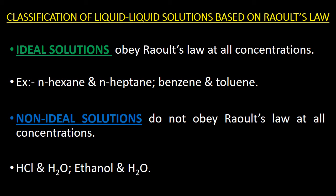Ideal solutions are the solutions which obey Raoult's law at all concentrations. Examples of ideal solutions are a mixture of N-hexane and N-heptane, or a mixture of benzene and toluene. Non-ideal solutions are the solutions which do not obey Raoult's law at all concentrations. Examples of non-ideal solutions are a mixture of HCl and H2O, or a mixture of ethanol in water.